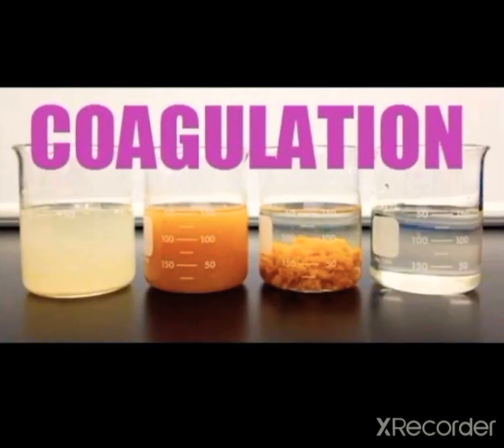Next is coagulation, also called loading. This is the process of helping fine solid particles in a solid-liquid mixture to settle faster by adding a special chemical. As shown in the beakers, when a yellow-colored substance is mixed with a white liquid, the mixture turns orange and the particles do not settle down easily. A chemical needs to be added to make the rate of settlement faster.